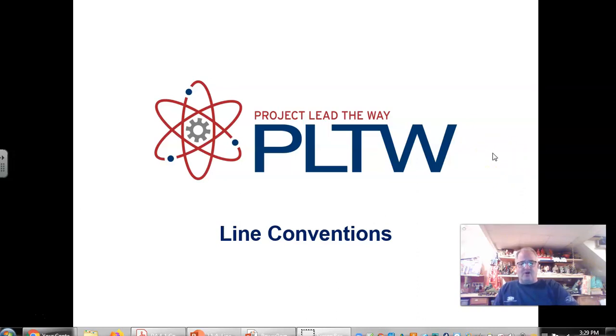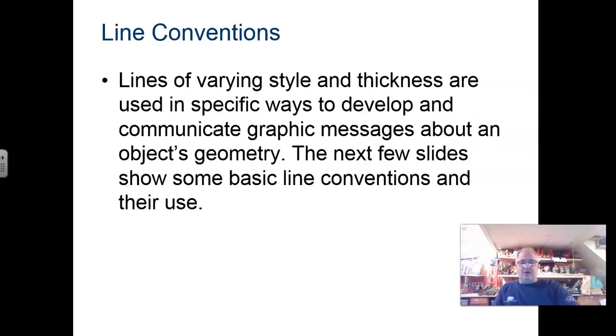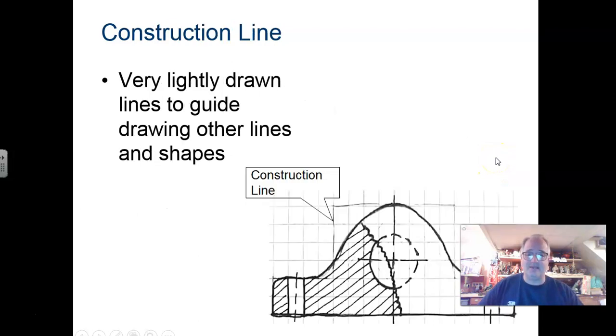We're going to start off with going through more of these line conventions. You will notice, if you already have, that there are varying different styles and thicknesses. We've gone over borderlines and title blocks, object lines, hidden lines, and center lines, so you're going to get a few more than that today.